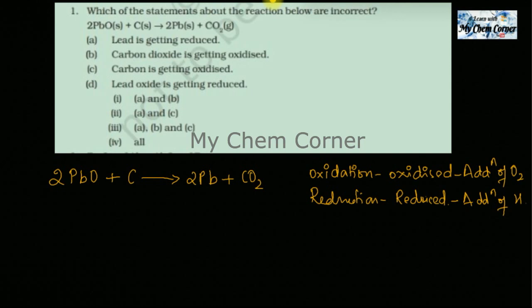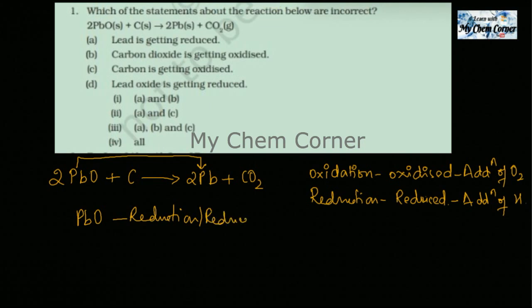Looking at PbO: it already had oxygen on the reactant side. When it converts from PbO to Pb, the oxygen is removed. Since oxygen is removed, by the definition of reduction — removal of oxygen — PbO has undergone reduction, or in other words, PbO has been reduced.